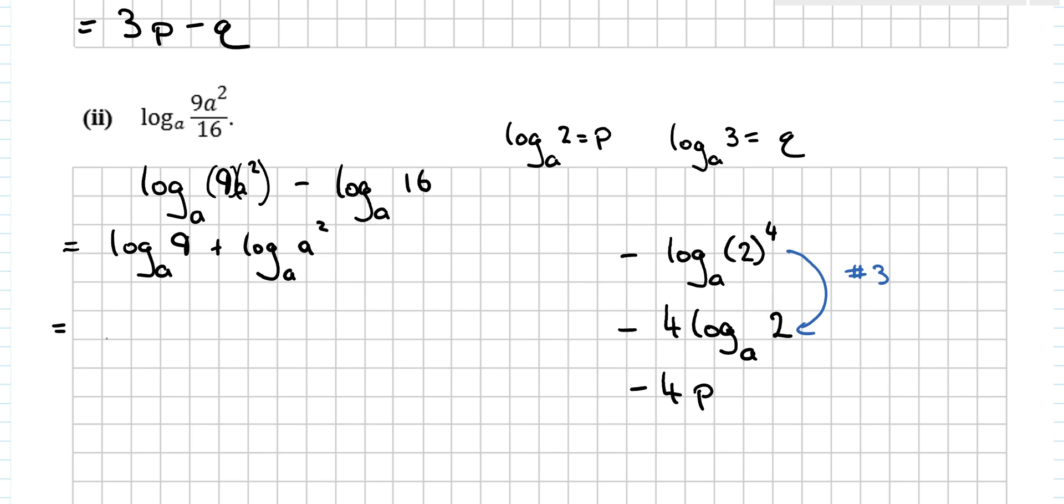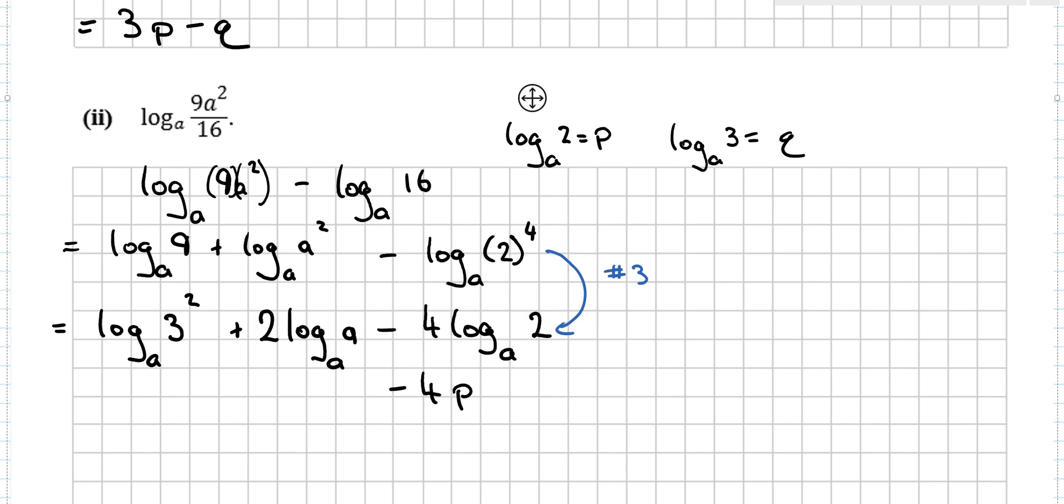So this is log base a of 9 plus log base a of a². This 9 could be written as 3². And this squared could be brought out to the front. And now I do have enough space and I'm going to bring that back in. This squared here, that can also be brought out to the front. So it's 2 log base a of 3 plus 2 log base a of a minus 4p.